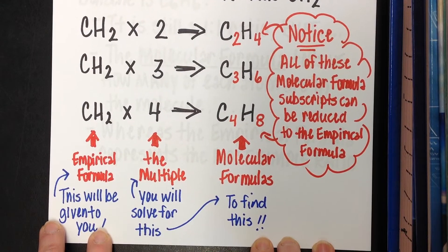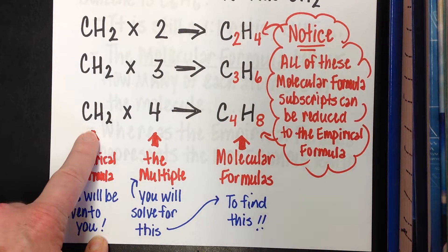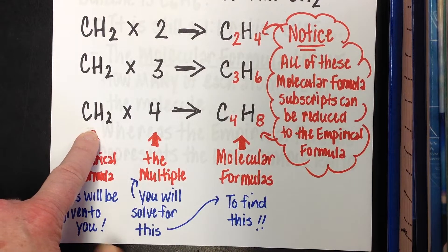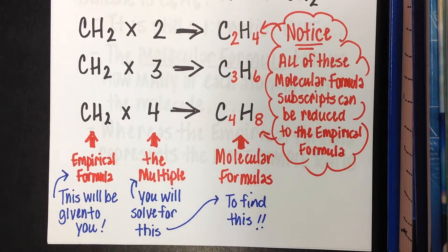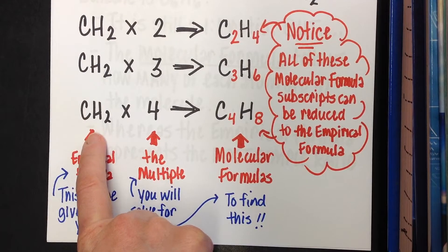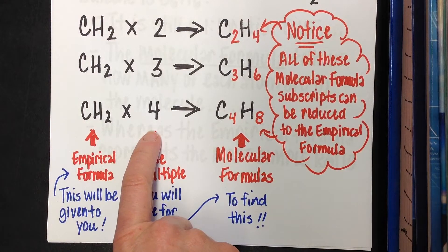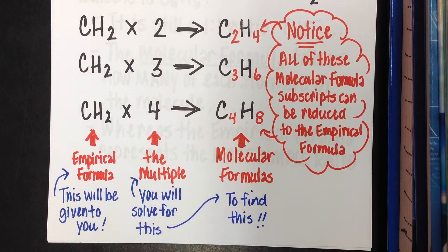Today, the empirical formula is going to be given to you — that's what you learned to find in the empirical formula lesson. We're also going to give you something called the molecular molar mass, sometimes called the experimental molar mass. You'll use that to find the multiple, then multiply it by the subscripts in your empirical formula to get your molecular formula.